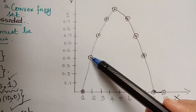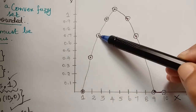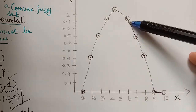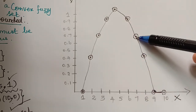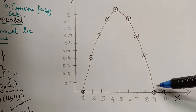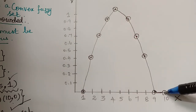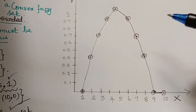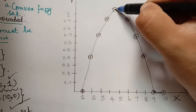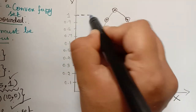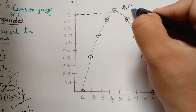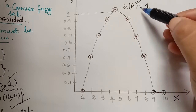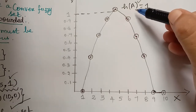For the value 1 the membership grade was 0, for 2 it was 0.4, for 3 it is 0.7, for 4 it is 0.9, for 5 it is 1, for 6 it is 0.9, for 7 it is 0.7, for 8 the membership grade is 0.4, and for 9 and 10 it is 0. The height of the fuzzy set equals 1, which implies A is a normal fuzzy set — that is the first condition for a fuzzy number.